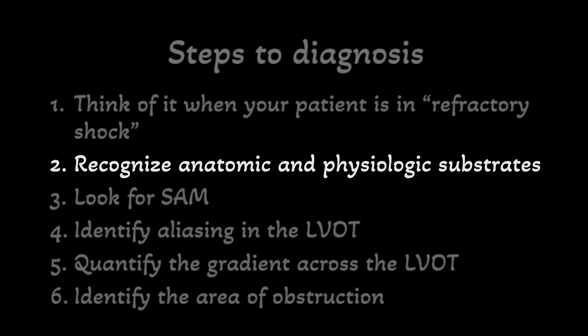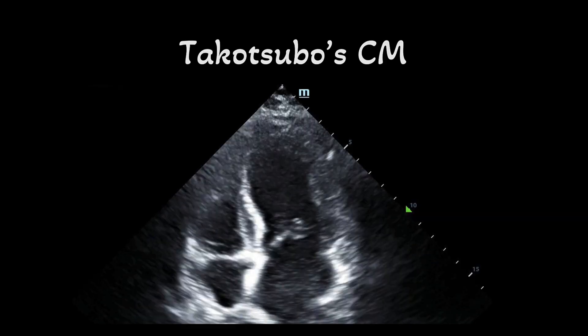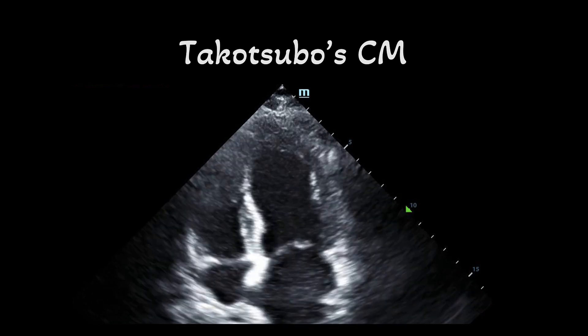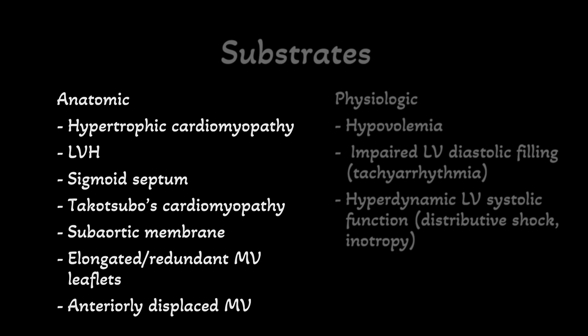The second step is to recognize anatomic and physiologic substrates that predispose to the development of dynamic LVOTO and mid-cavitary gradients. Anatomic substrates include any structural or functional conditions that lead to narrowing of the LVOT. Common ones include hypertrophic cardiomyopathy, left ventricular hypertrophy, and a sigmoid septum. Takotsubo's cardiomyopathy results in hyperkinesis of the LV base to compensate for the akinetic apex, causing high velocities through the LVOT that can lead to SAM. Valve abnormalities such as subaortic membranes, elongated mitral valve leaflets, and a post-surgical anteriorly displaced mitral valve can also predispose to LVOTO. Importantly, not all patients who develop this phenomenon have predisposing anatomic substrates.